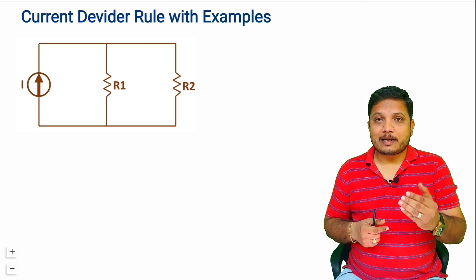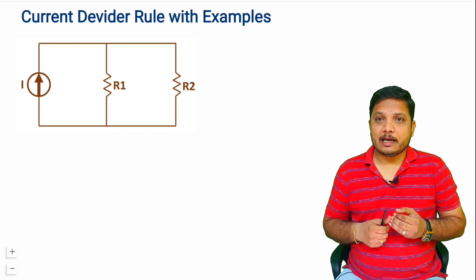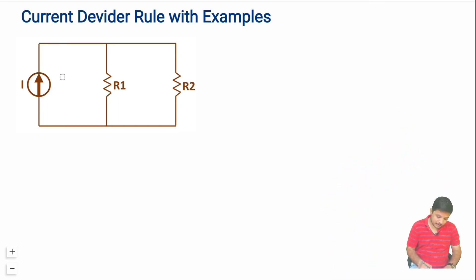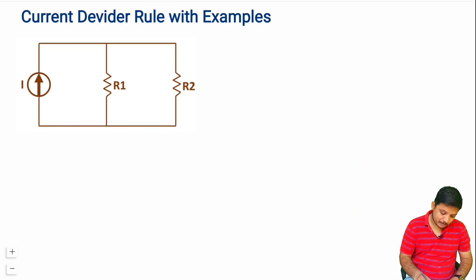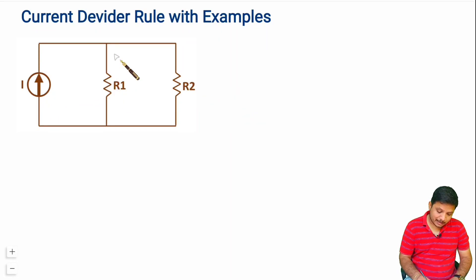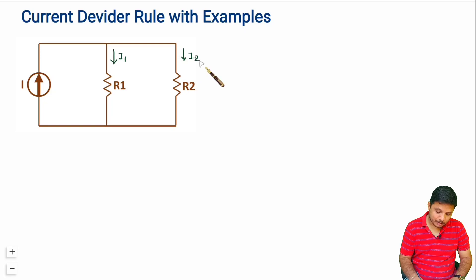Let us start with the basic understanding of the Current Divider Rule. We are given one network in which current I is getting divided into R1 and R2. Let us say in R1 the current is I1, and in R2 the current is I2.